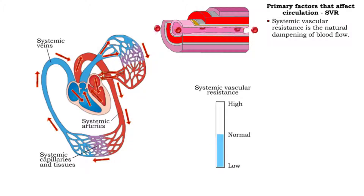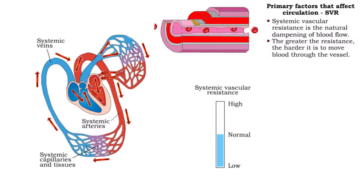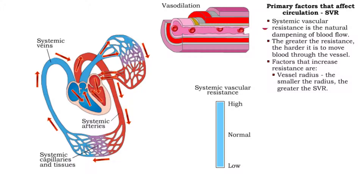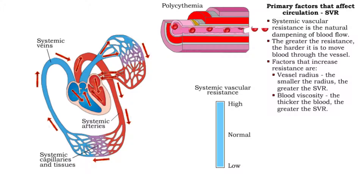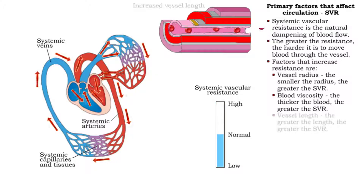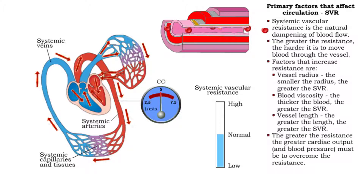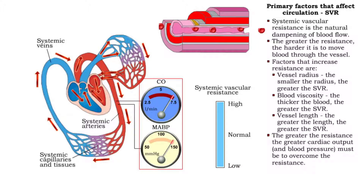Systemic vascular resistance is simply the natural dampening of blood flow that occurs in the vessel. The greater the resistance, the harder it is to move blood through the vessel. Factors that increase resistance include smaller vessel radius. The greater the resistance, the greater cardiac output and blood pressure must be to overcome it.